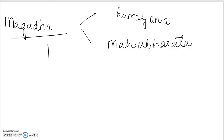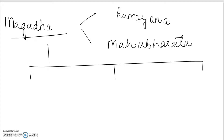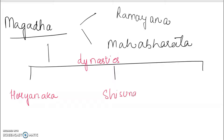So this Magadha empire, it had three dynasties. In those dynasties, you generally have kings. So empire, then comes the dynasty, then comes the kings. The first one is Haryanka dynasty. Then after that, the second ones were known as Shishunagas. And the third one are Nandas. I'm going to talk of Nandas because it's very, very important — during the time of Nandas, it's Alexander who attacked.